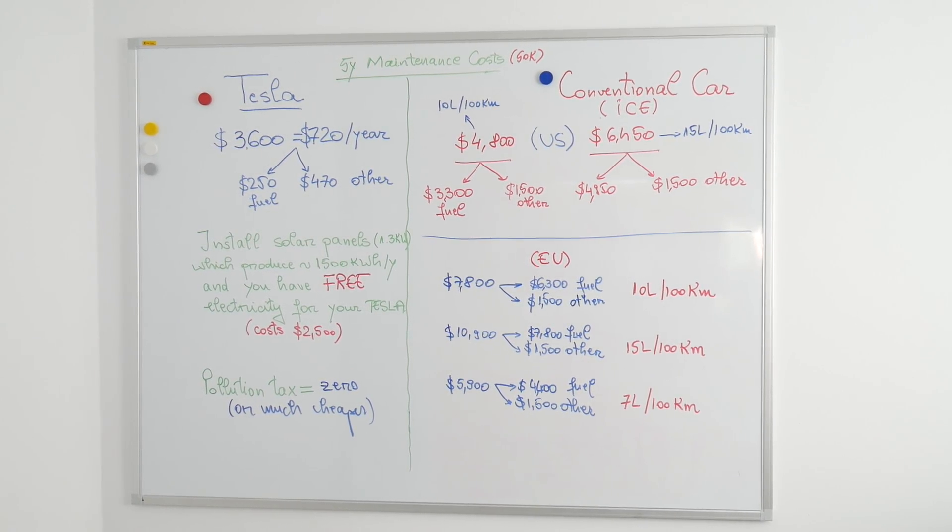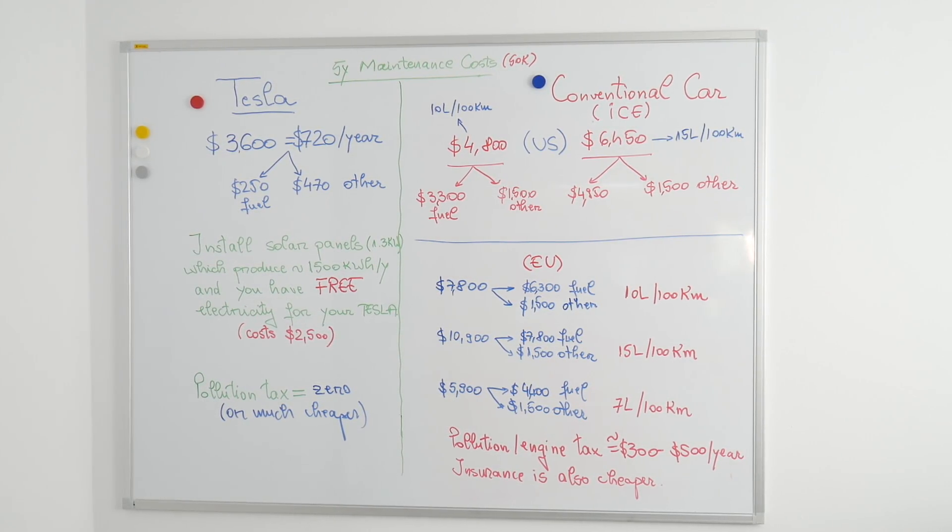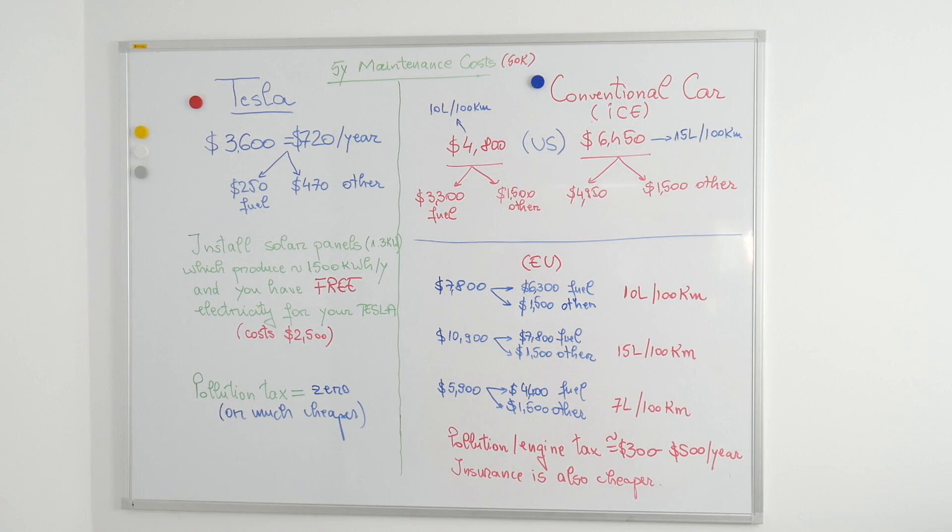You also need to pay a tax for pollution, at least in the UK or in Romania. The average cost is around $300 per year, and in more expensive European countries, it's much more expensive.